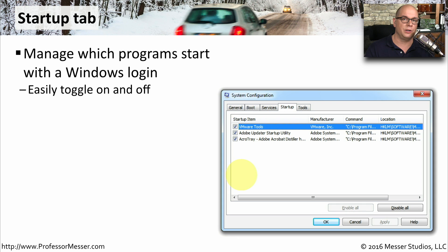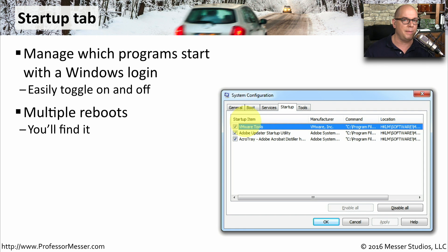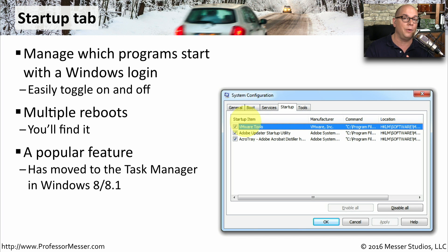As with services, there are also a number of applications that begin during startup, and you'll find all of those under the Startup tab. You probably won't see just three startup applications — there may be pages of these on a particular system. It's very easy to enable and disable these with the checkboxes, so you can disable a certain set of applications, reboot your system, and see if you've found where the problem happens to be. This is a very popular feature, and it's now in Task Manager in Windows 8 and 8.1. You'll still find it in System Configuration in Windows Vista and Windows 7.